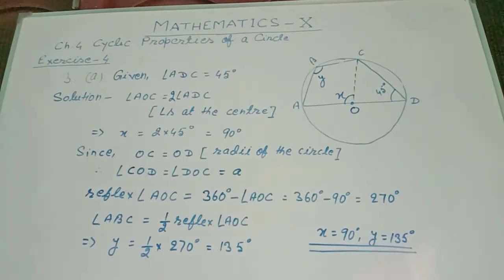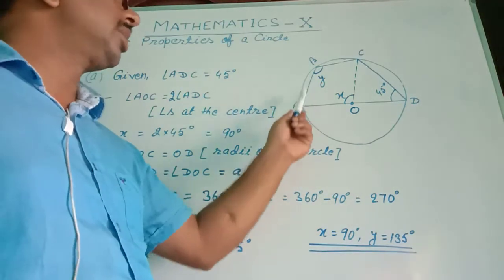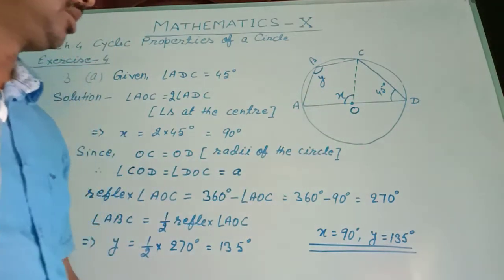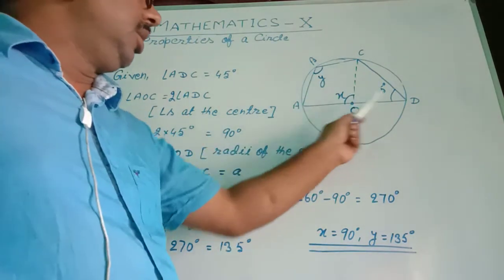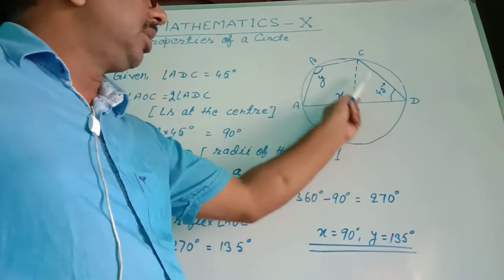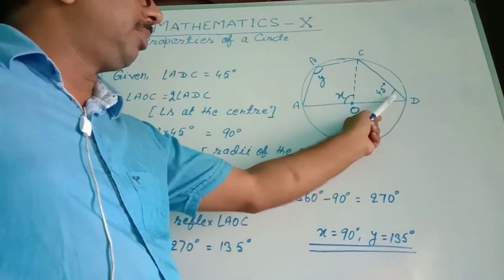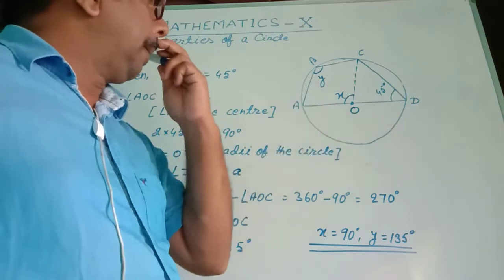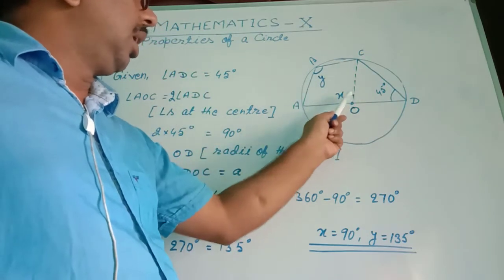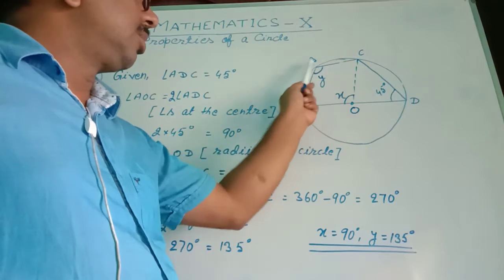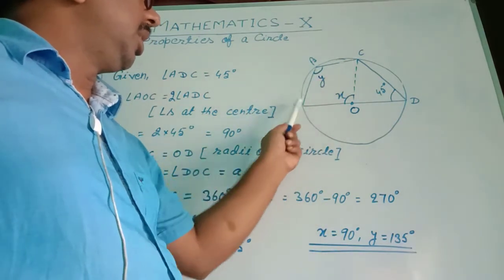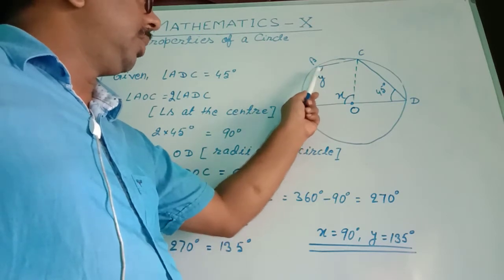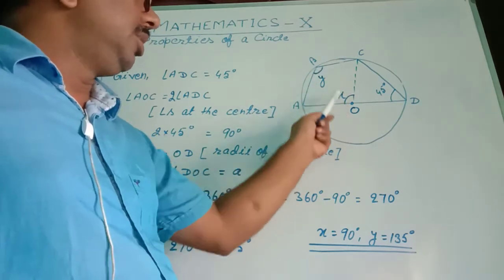Question number 3A: a figure is given with one cyclic quadrilateral ABCD drawn in a circle having center O. CD and AD are diameters subtending an angle of 45 degrees at point D. OC is joined, and AB and BC are chords. AB is subtending angle Y, and angle AOC is X.